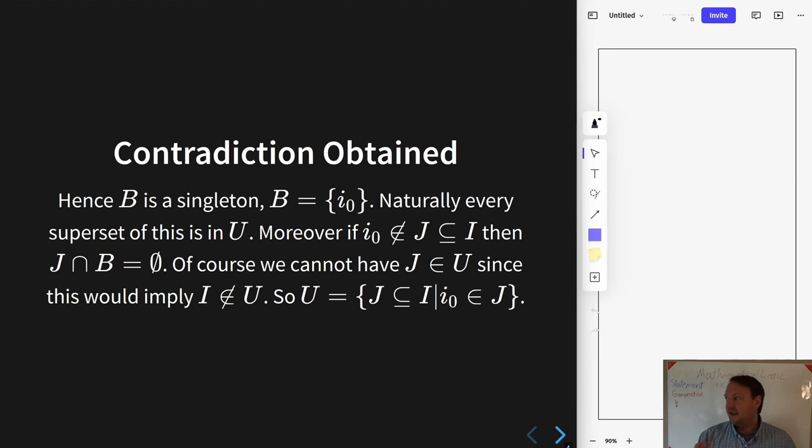It is always, just by closure under supersets, I is always a superset of anything in the ultrafilter, so I always gets into the ultrafilter. So you can't have that contradiction reached.